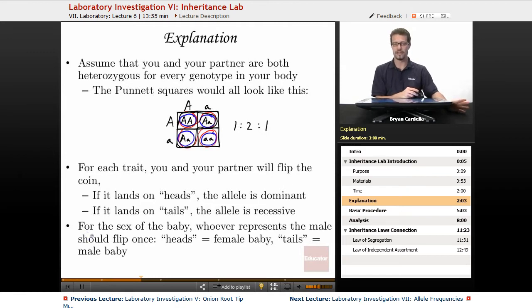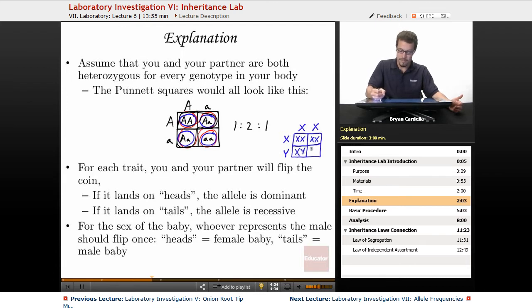Before you get started with all these different traits, you've got to determine what the sex of the baby is going to be. This has to do with what sex chromosome is actually in the sperm that fertilizes the egg. If we do a mini Punnett square, females are XX. Every egg should have just an X chromosome. But with sperm, half are going to have the X, half are going to have the Y. Whichever partner represents the man, that person flips it once. There's a 50% female, 50% male. If it's heads, an X chromosome fertilized the egg. If it's tails, a Y chromosome fertilized the egg and it's a male baby.